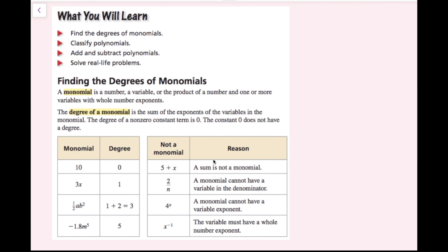Some examples of non-monomials: 5 plus x has two terms, and we only want one term. 2 over n is not a monomial because we never want a variable in the bottom of a fraction. 4 to the a is not a monomial because we don't want a variable in the exponent. And x to the negative 1 is not a monomial because negative exponents can be rewritten as fractions, putting the variable in the denominator.